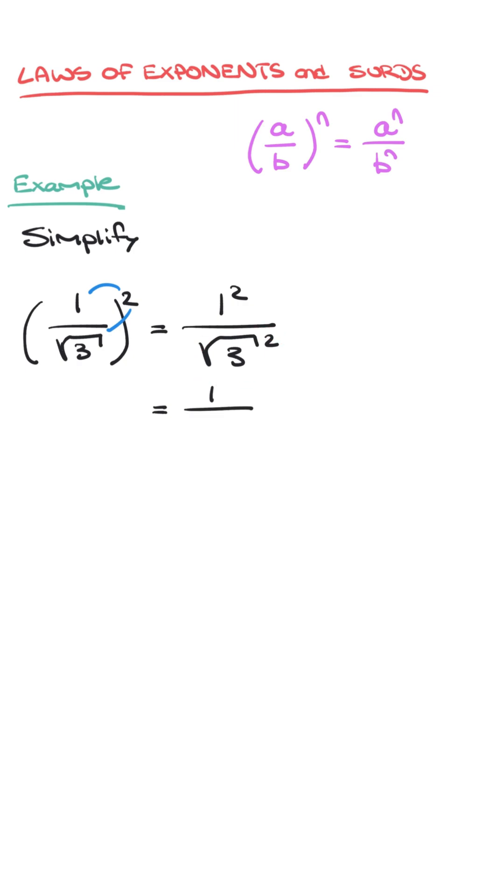And now for this denominator, the thing to remember is, if we square a square root, those two things cancel each other out, and we're just left with whatever's under the root. So in this case, 3.